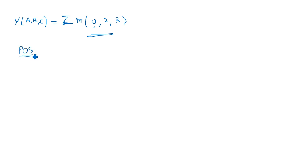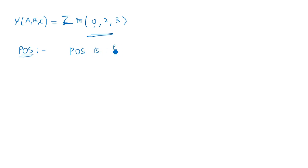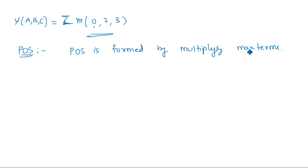Now, for POS — Product of Sums — consider the same example. SOP is formed by adding min terms, whereas POS is formed by multiplying max terms. Min terms are related to SOP, max terms are related to POS. Multiplication is represented using the pi symbol (π), and max terms are denoted with capital M. So we will have M0, M1, M2, and so on.